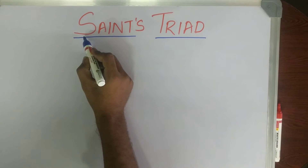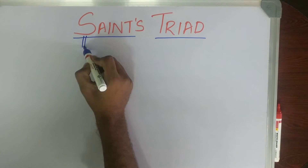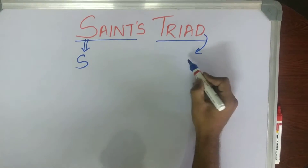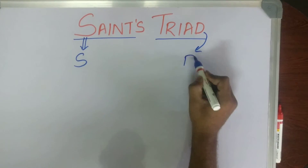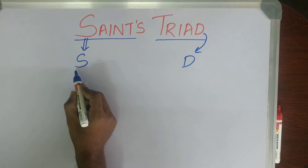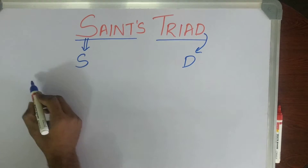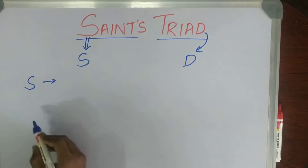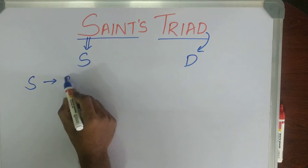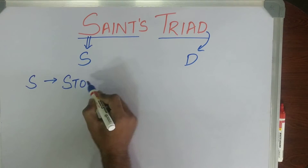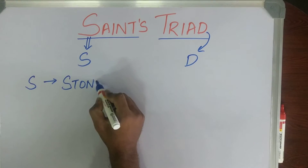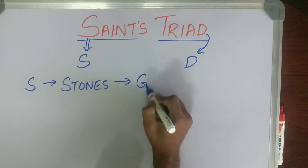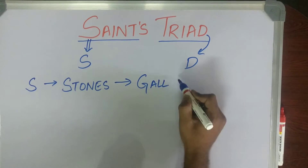Saints Triad. Saints Triad has S. So what is S? S is Stones — Gallstones.